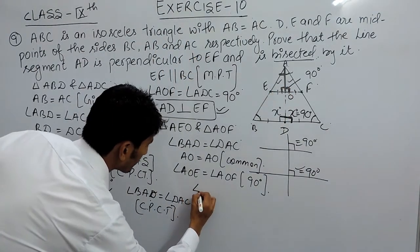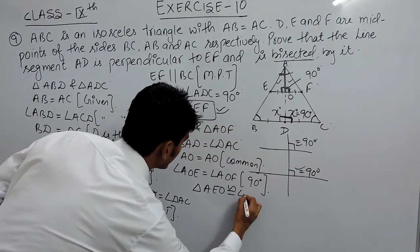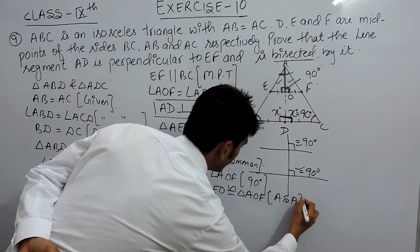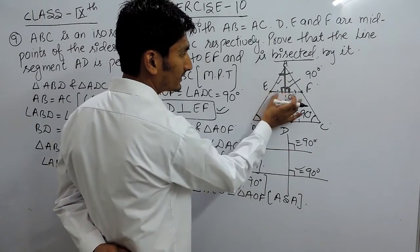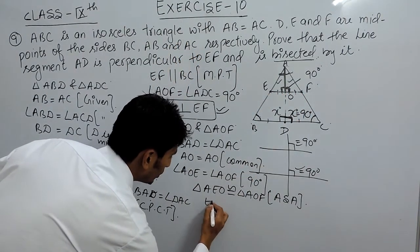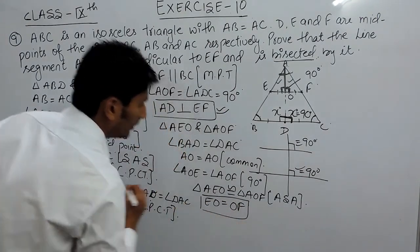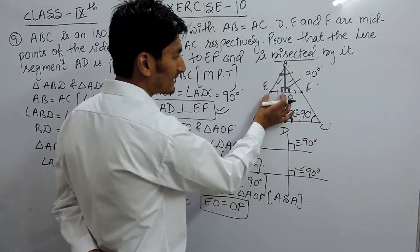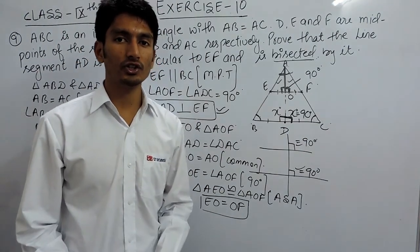By the Angle-Side-Angle property — two angles and one common side — triangle AEO is congruent to triangle AOF. Since these two triangles are congruent, their other corresponding parts must also be equal. Therefore EO equals OF, which means AD bisects EF. This is how you can solve this question. Thank you.